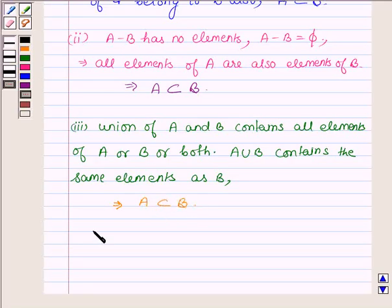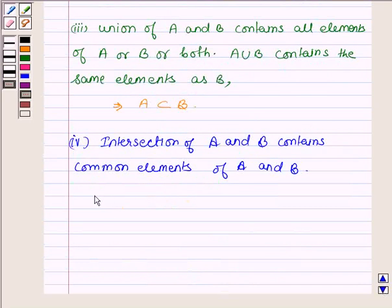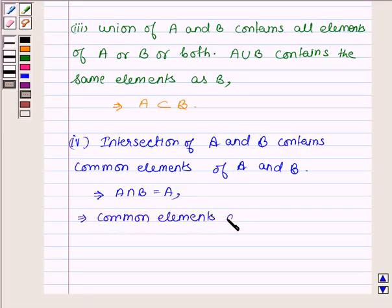Now the fourth condition says intersection of A and B contains common elements of A and B. This implies A intersection B is equal to A implies that common elements are elements of A. And thus A is a subset of B.